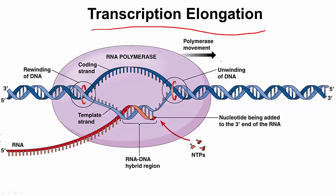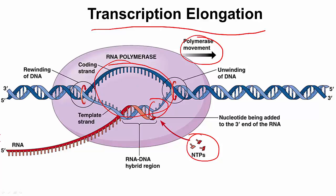Transcription elongation is basically the process of continuously growing out the RNA transcript. After initiation, the transcription factors that were bound to the promoter are left behind and will dissociate from the DNA. We just have the RNA polymerase II that will continue to traverse the DNA, creating the transcription bubble as it moves along. In the transcription bubble, RNA nucleotides are recruited and base-paired using the DNA template strand as a template, in order to grow the RNA transcript from a five-prime to three-prime direction, because this has to be complementary to the template strand.